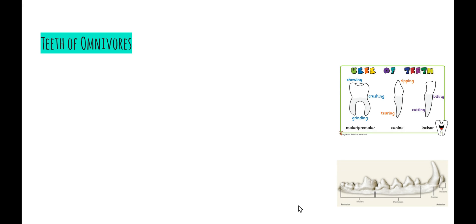We're going to look at the teeth of omnivores, herbivores and carnivores, and examine how different each group's teeth are. In particular, we'll be looking at the four different types of teeth. We'll start by looking at the teeth of omnivores — humans are omnivores, so this is the easiest one for us to relate to, as we all have these types of teeth in our mouths.